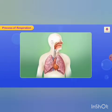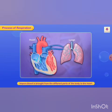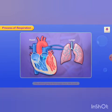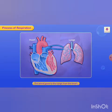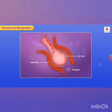Process of respiration: impure blood is brought from the different parts of the body to the heart. The blood goes to the lungs from the heart. The air sacs now contain carbon dioxide.